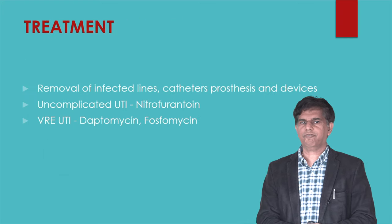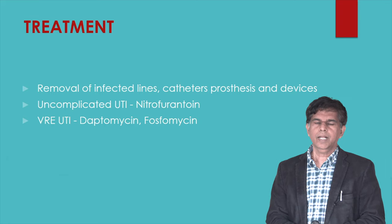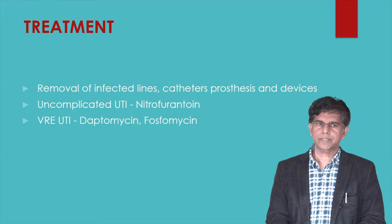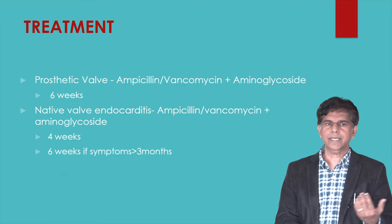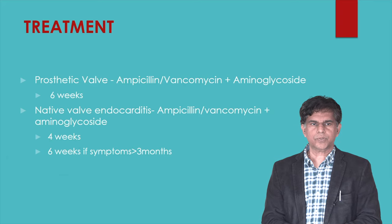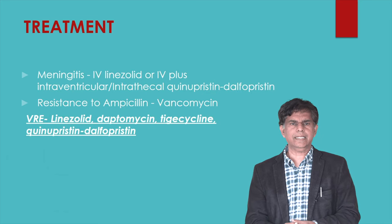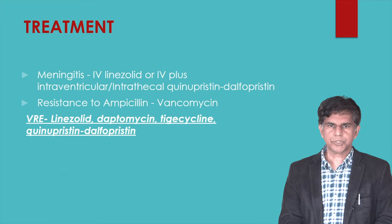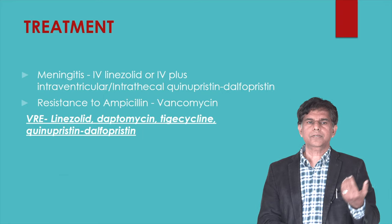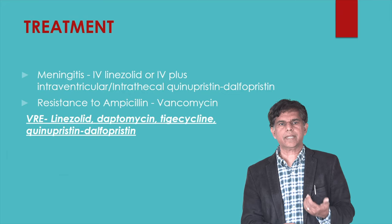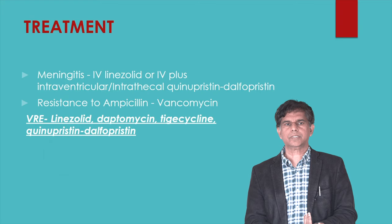Treatment begins with removing infected lines, catheters, prostheses, and devices. For uncomplicated UTI, nitrofurantoin can be used, but for VRE UTI, daptomycin and fosfomycin are given. For prosthetic valve endocarditis, ampicillin or vancomycin plus aminoglycoside for six weeks is used. For native valve endocarditis, ampicillin, vancomycin, and aminoglycoside for four to six weeks depending on symptom duration. For meningitis, IV linezolid or intrathecal quinupristin-dalfopristin is used. For VRE, treatment options include linezolid, daptomycin, tigecycline, and quinupristin-dalfopristin.